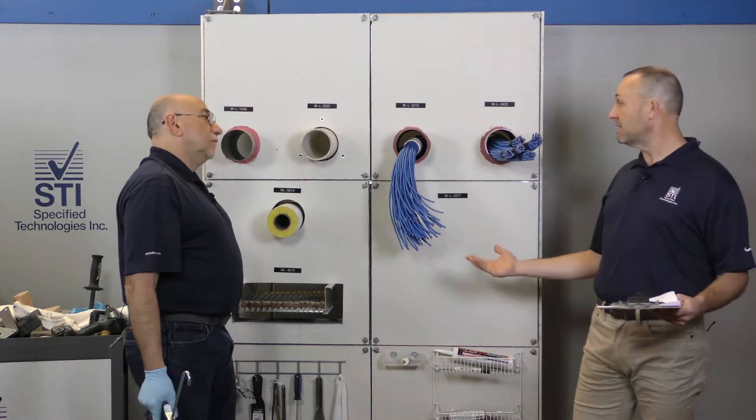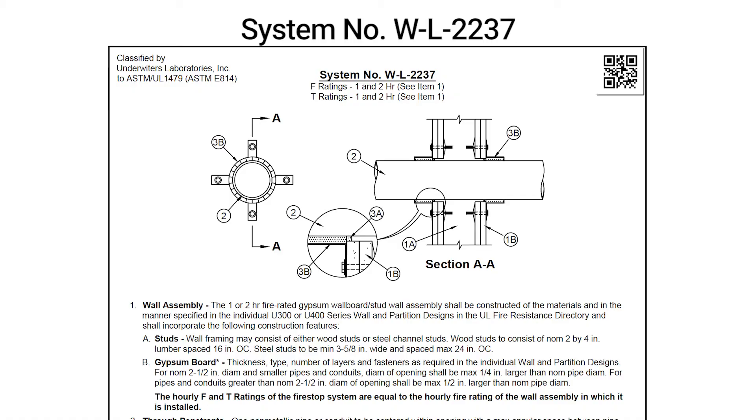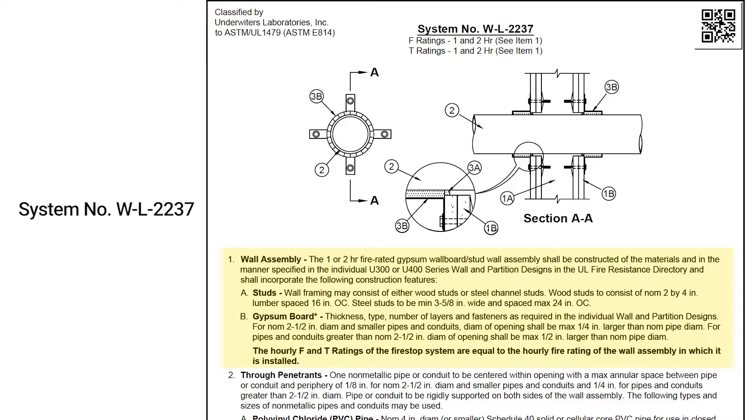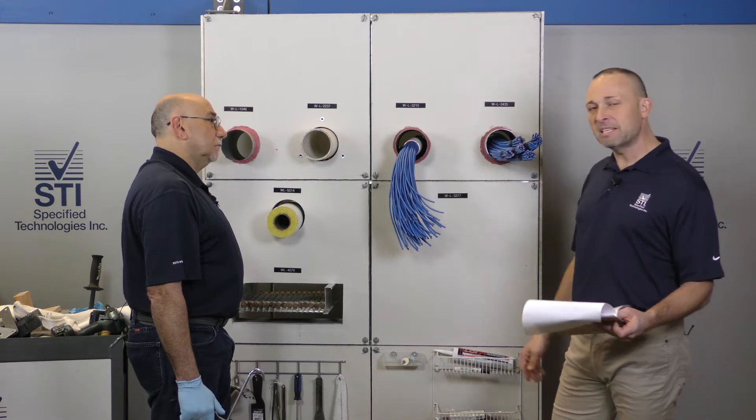This system is for plastic pipe - a couple different options: PVC, CPVC, ABS piping. This is for four inches and under, maximum of four inches. So we're going to need some type of intumescent material, more than just the caulk.